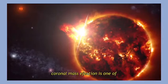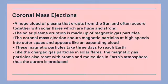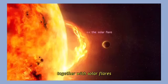Coronal mass ejection is one of the phenomena that occurs on the surface of the sun. Coronal mass ejection is a huge cloud of plasma that erupts from the sun and often occurs together with solar flares which are huge and strong.